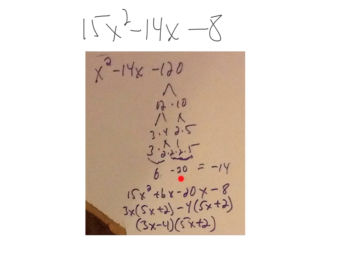And then I noticed that 20 minus 6 is 14, and that's what I wanted. I knew it was negative. And then in order to get the negative 14, I had to make the 20 be negative. And then I just separated, went back to the original. There's the 15x squared, the negative 8,